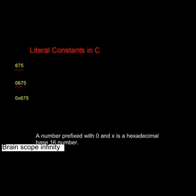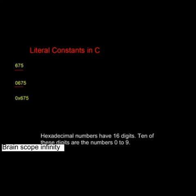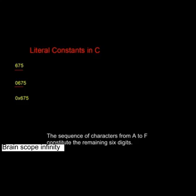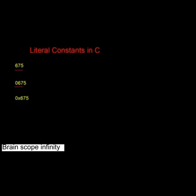A number prefixed with 0x is a hexadecimal base 16 number. Hexadecimal numbers have 16 digits — 10 of these digits are the numbers 0 to 9, and the remaining 6 are borrowed from the English alphabet. The sequence of characters from A to F constitute the remaining 6 digits. This is a hexadecimal literal number.